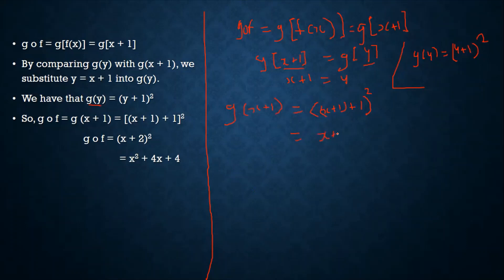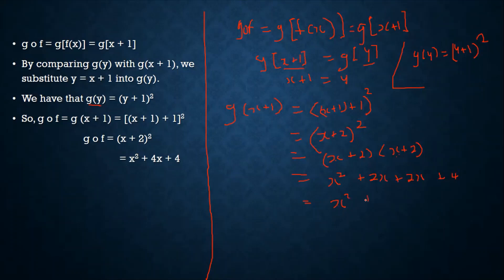(x + 2)² means (x + 2)(x + 2). Expanding: x × x = x², x × 2 = 2x, 2 × x = 2x, 2 × 2 = 4. So we get x² + 4x + 4. Therefore g of f equals x² + 4x + 4.